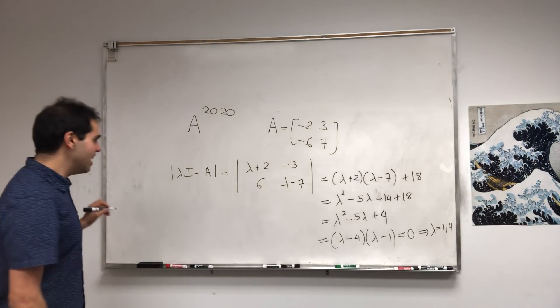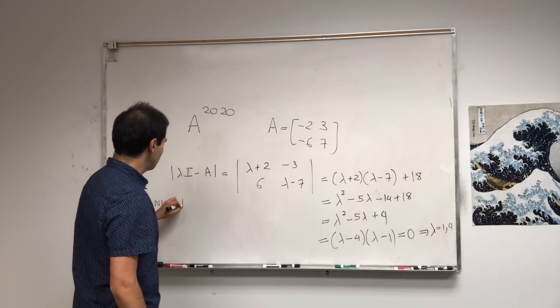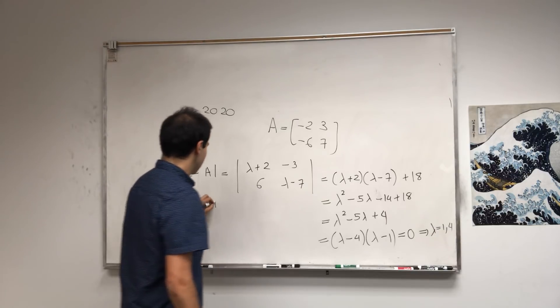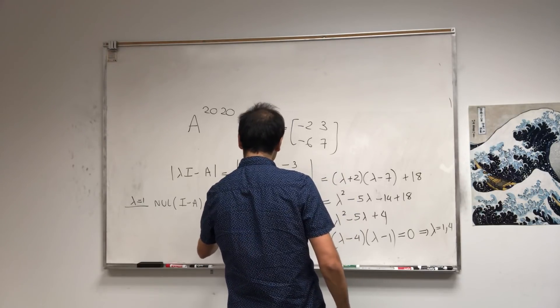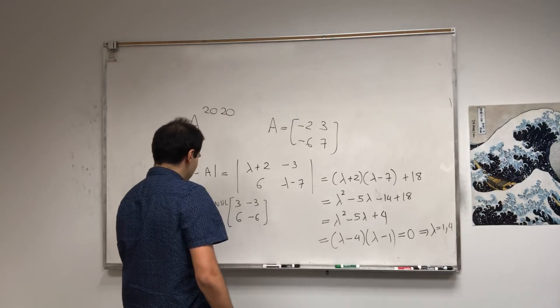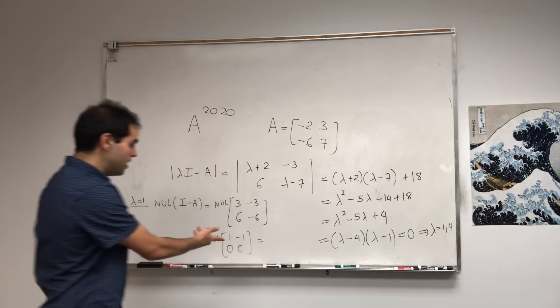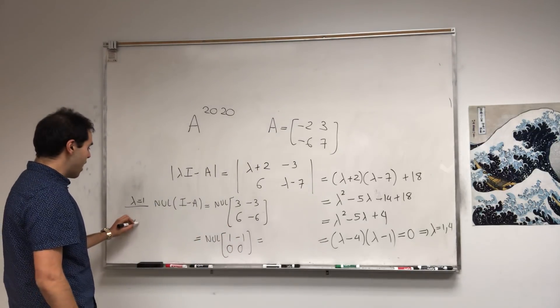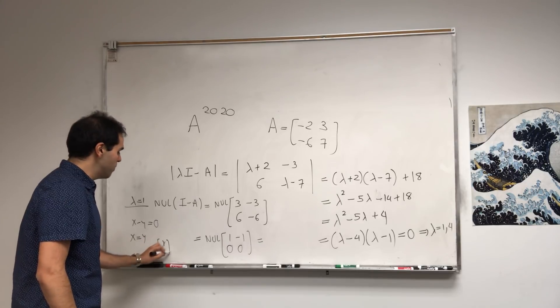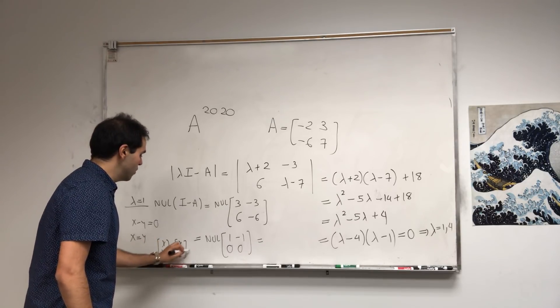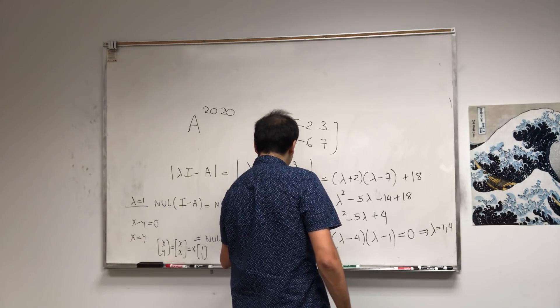Now let's find the eigenvectors. First, the eigenvector corresponding to λ = 1, which is the null space of I - A. So you plug in λ = 1: [3, -3; 6, -6]. Row reduce to get null space of [1, -1; 0, 0]. This tells you x - y = 0, so x = y. So your vector (x, y) is any multiple of (1, 1).